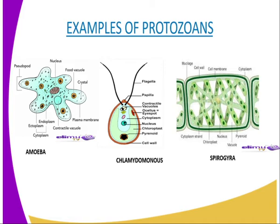Remember in the case of kingdom Monera, their nuclear material is not membrane bound, hence they are prokaryotic. But in the case of the protozoans, their nucleus is bound by a membrane, that is why we call them eukaryotes. The third characteristic of the protozoans is that they have many organelles including mitochondria, which are membrane bound.